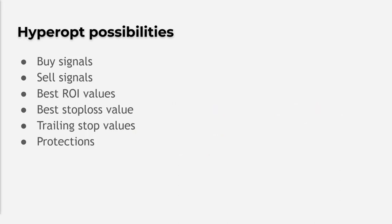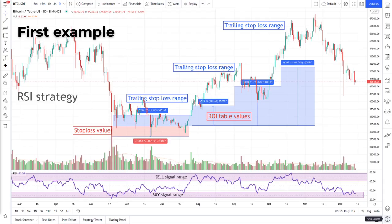So now you know what hyperopt does — it tries to find the best parameters for you in an automated way. Hyperopt can help you find the parameters for the following goals: the best parameters for your strategy for buy signals and sell signals, the best return on investment values, the best stop loss and trailing stop loss values, and the best protection settings for your strategy.